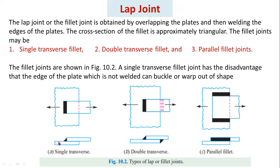From the figure you can observe the single transverse welded joint showing a top view and a front view, where the cross section of the fillet is approximately triangular. This figure shows the top view and front view of a double transverse welded joint. This is an example of a parallel fillet joint.